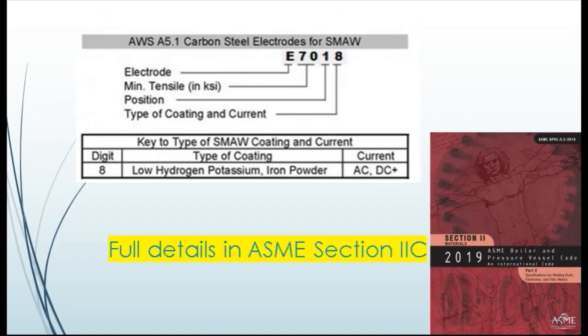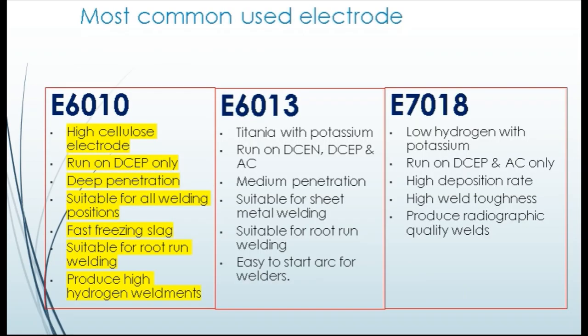Here is another example of the famous electrode E7018. Please have a look and try to decode it. If you want to see all types of electrodes and their properties, you can find them in the AWS specification section. The most commonly used electrodes with their properties are listed here for viewer reference. Please have a look at each and understand their uses.